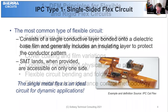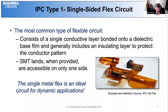The IPC Type 1 is the most common type of flexible circuit, consisting of a single conductive layer bonded between two insulating layers. SMT lands, when provided, are accessible only to one side of the circuit. The single metal flex circuit proves to be the ideal circuit for dynamic applications.